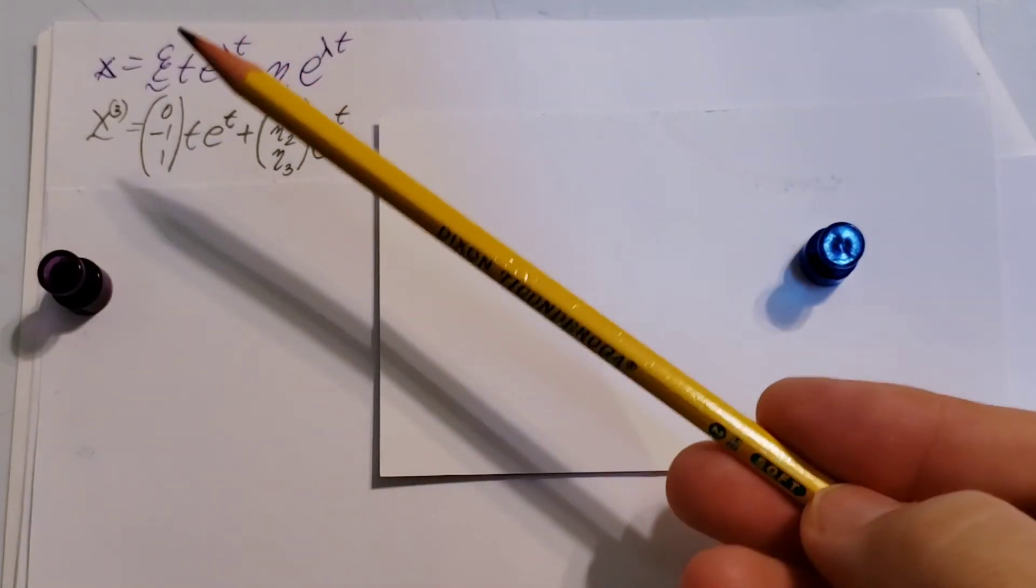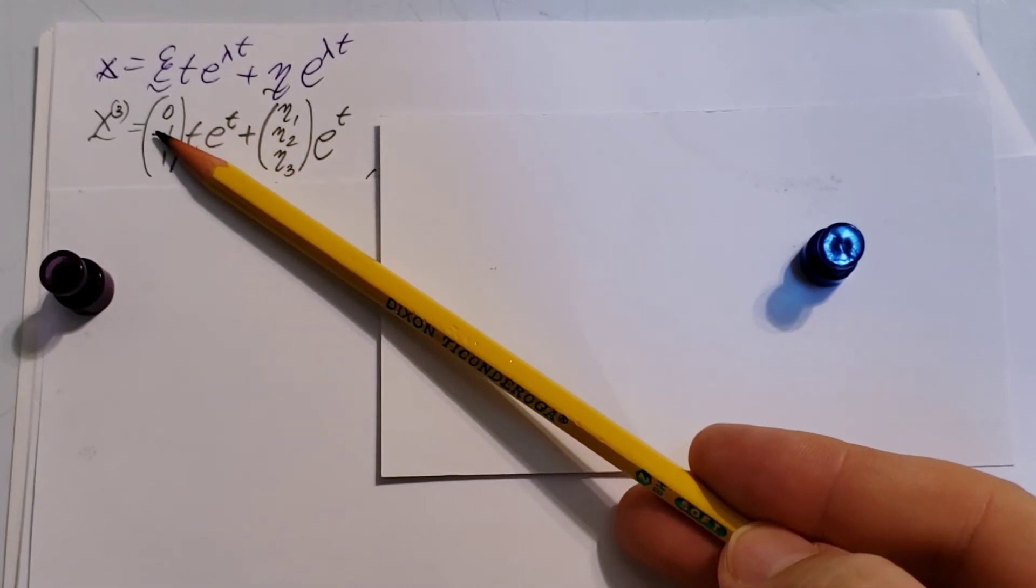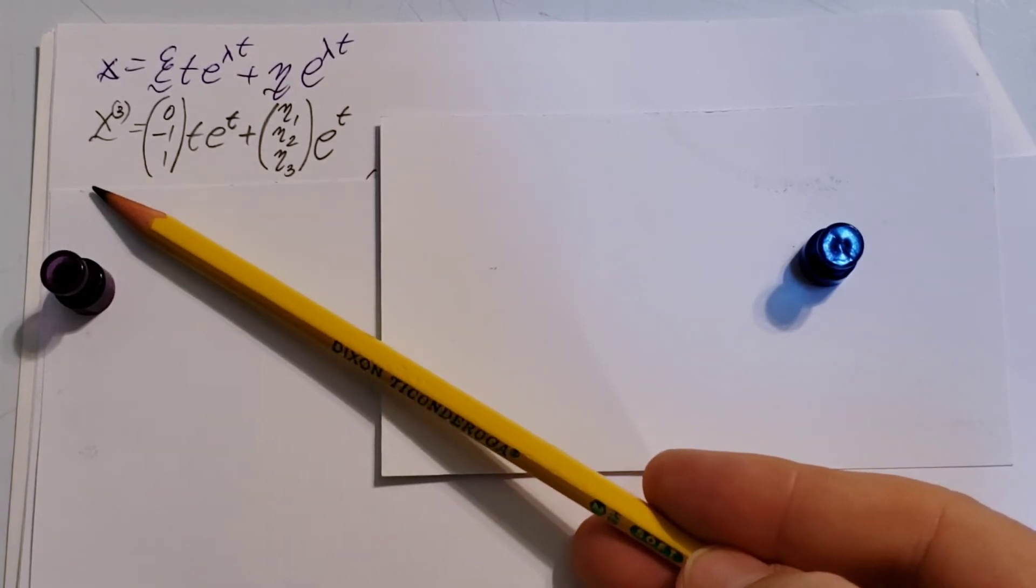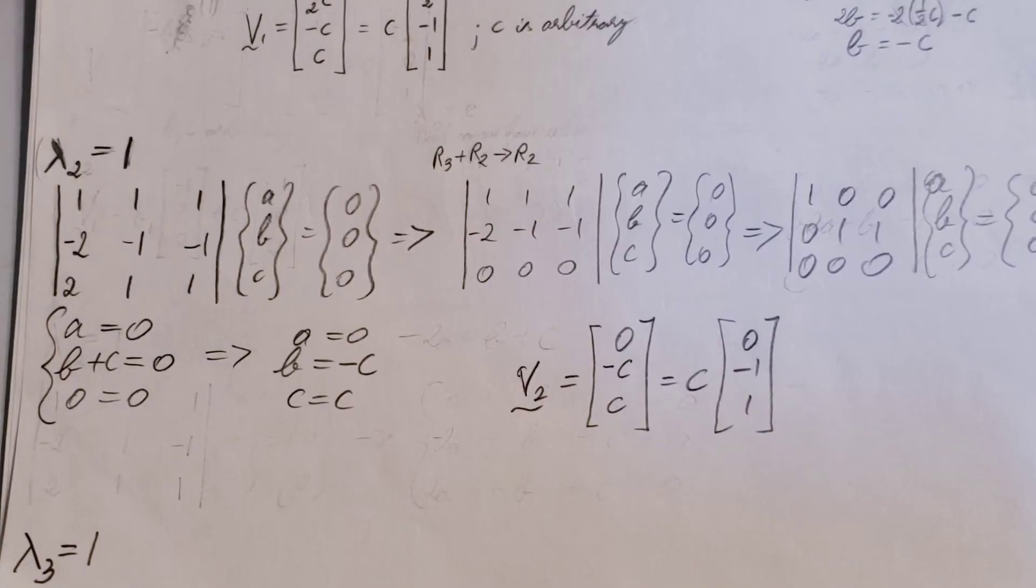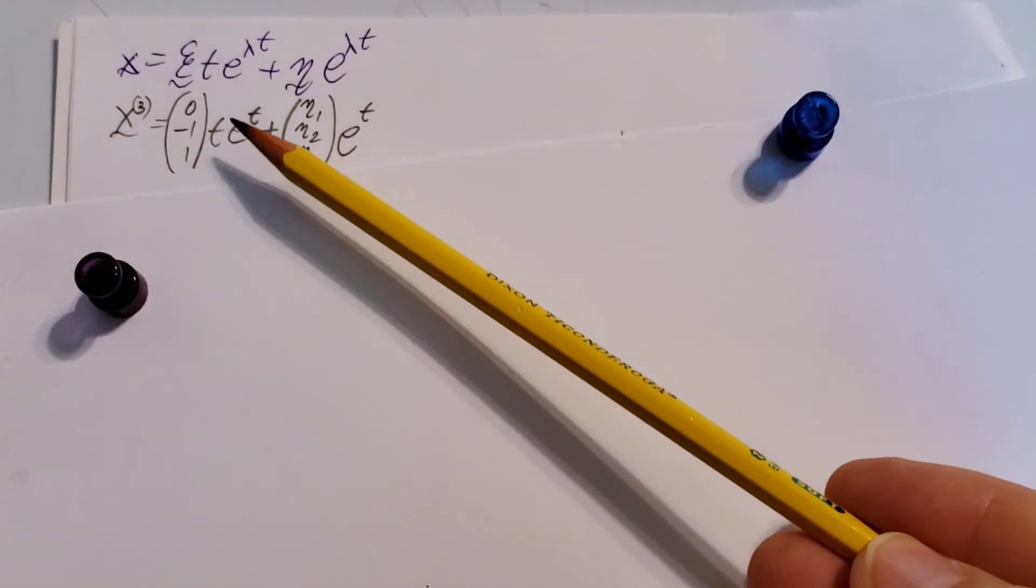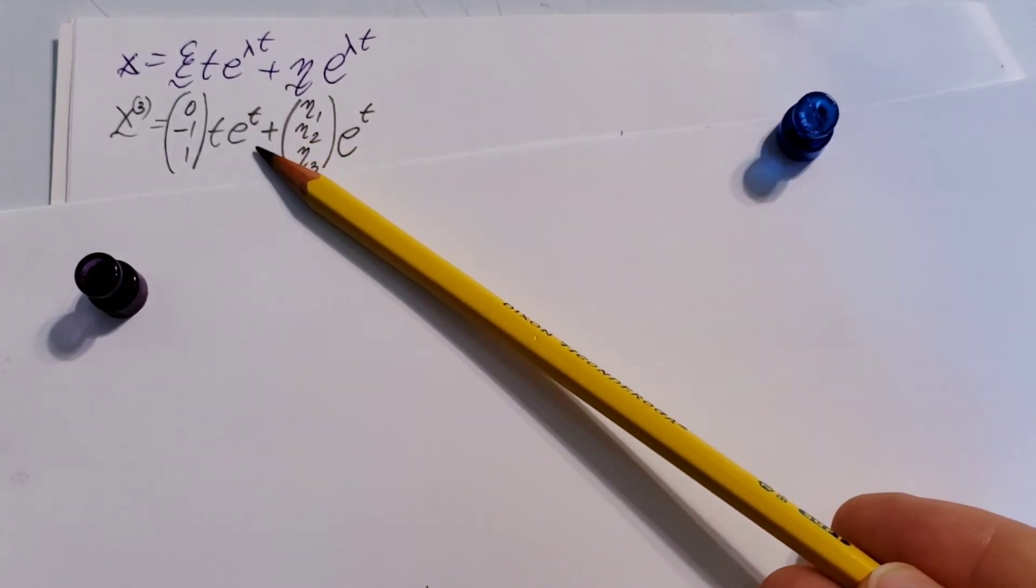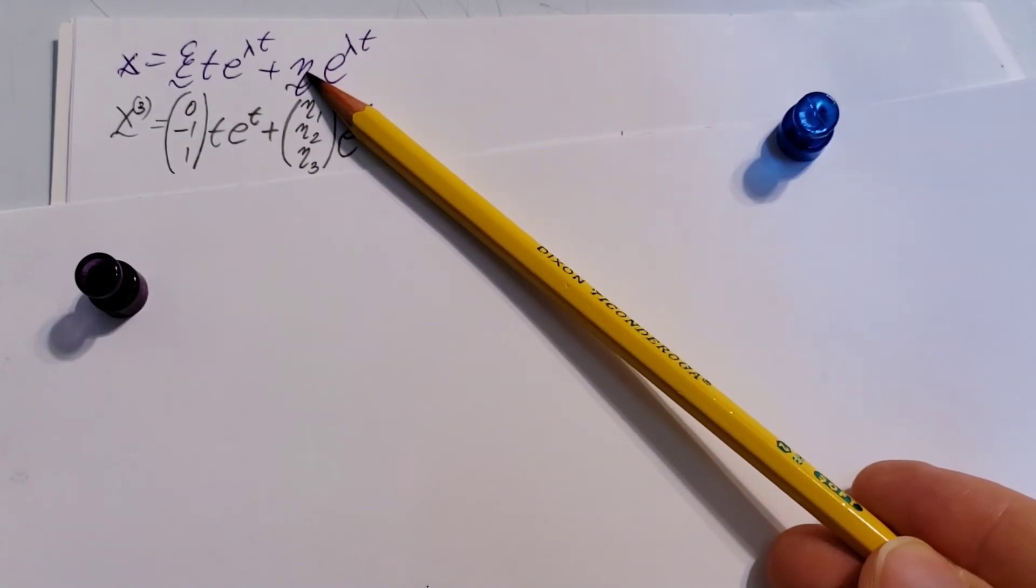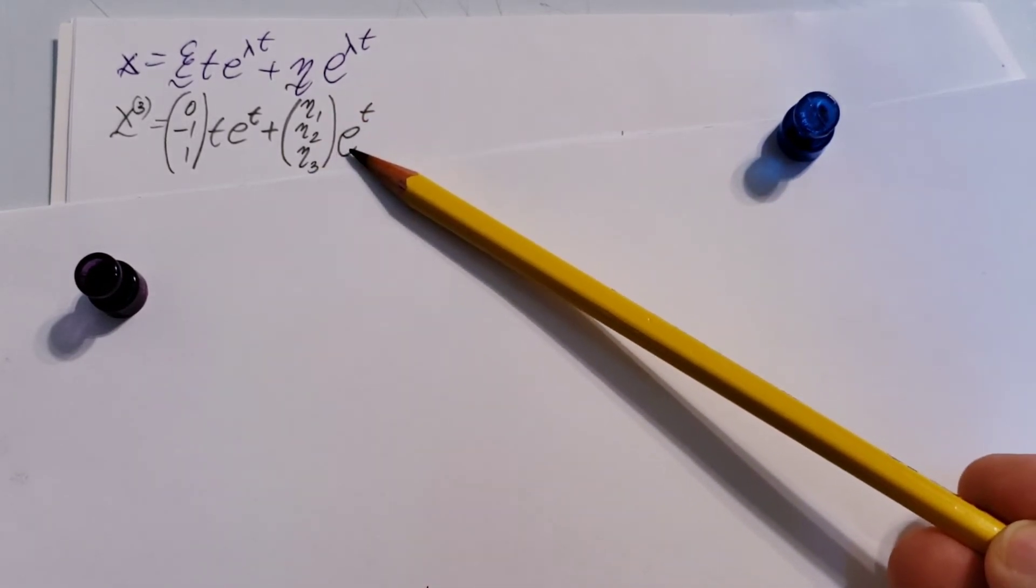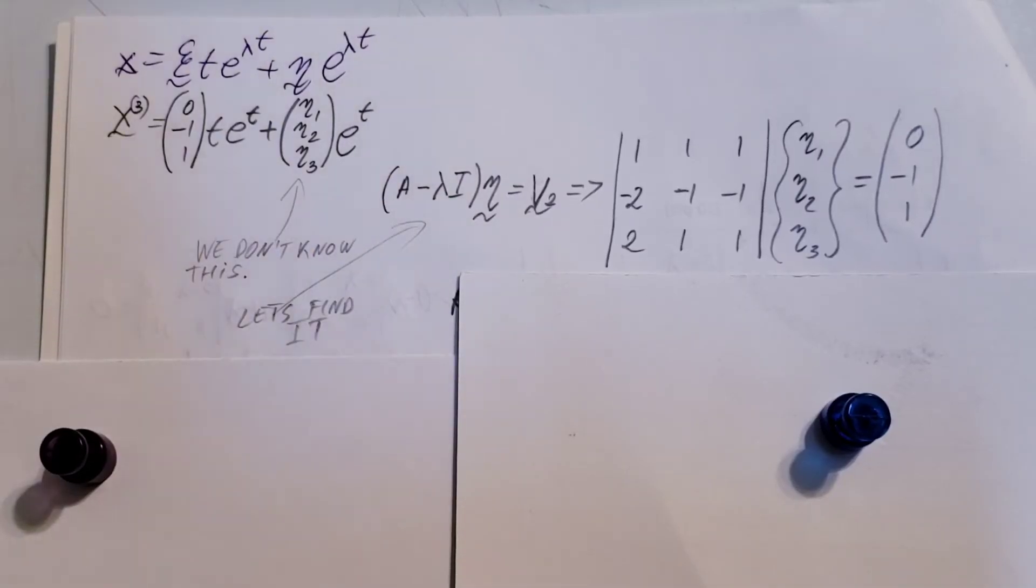Let's plug in what we know. The xi vector is actually the eigenvector that we have found for the first time we were calculating the vector for lambda equals 1. That's 0, negative 1, and 1. This one, this one right here, remember. te, lambda t, lambda is 1, our third eigenvector is 1, right? Plus eta, we have no idea what it is yet, we will have to calculate it, so just fill in eta 1, 2, and 3. And again, e to the lambda t, and lambda is 1.